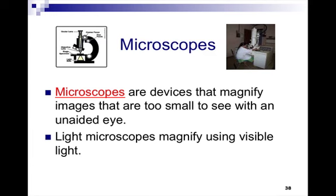Light microscopes magnify using visible light, and in our case the light source is going to be a light bulb. Back in the day they used a mirror and then they just used regular daylight in order to put the light through the microscope.